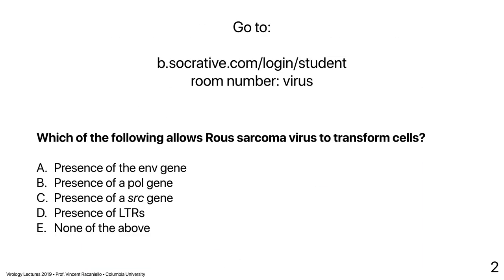Our second question: which of the following allows Rous sarcoma virus to transform cells? Presence of the envelope gene, presence of a pol gene, presence of a sarc gene, presence of LTRs, or none of the above? Most of you got C — presence of a sarc gene. The sarc gene is a cellular regulatory protein that is highly regulated. When the virus delivers it in an unregulated fashion, the cells divide. It's not the envelope, pol, or LTRs — it's the sarc gene that transforms the cells.